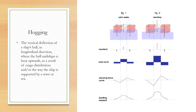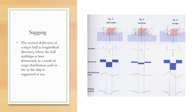The situation in figures one and two is called a hogging condition. Hogging is defined as the vertical deflection of a ship's hull in the longitudinal direction where the hull midships is bent upwards — as a result of cargo distribution with more cargo at the ends of the vessel, and also depending on how the ship is supported by the waves at sea. In hogging, there is more weight on the ends and less weight in the middle.